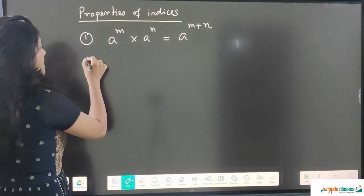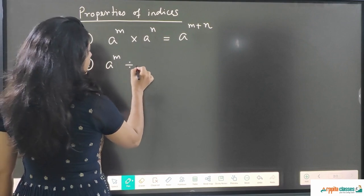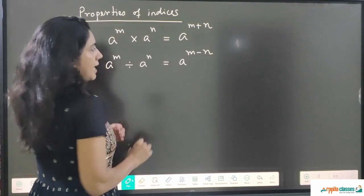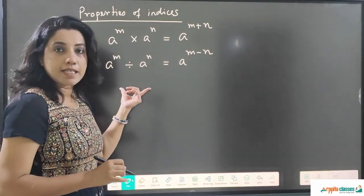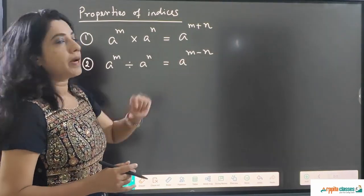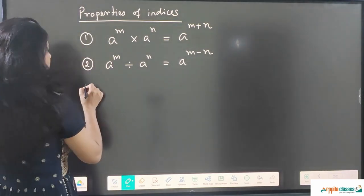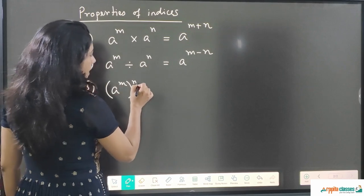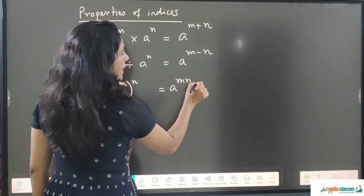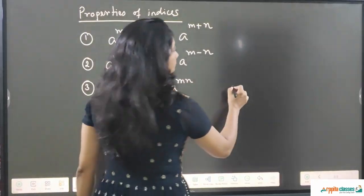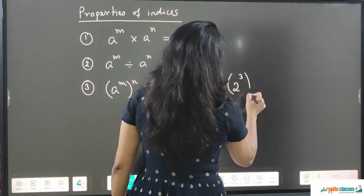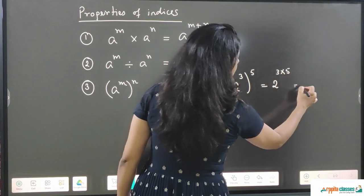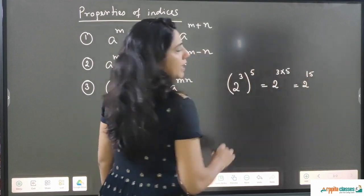The second property is: a to the power m divided by a to the power n equals a to the power m minus n. So again, if the bases are the same and they are in division form, we can subtract the powers. The third property is: a to the power m, whole to the power n, can be written as a to the power m × n. For example, 2 to the power 3 whole to the power 5 equals 2 to the power 15.